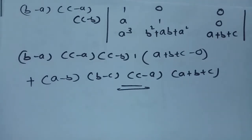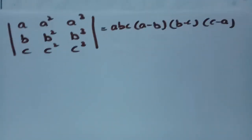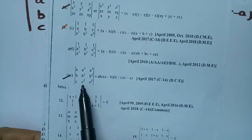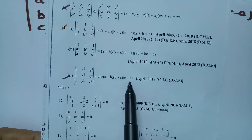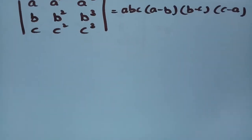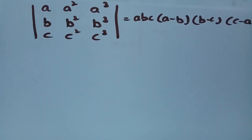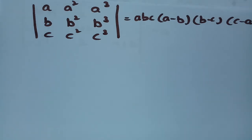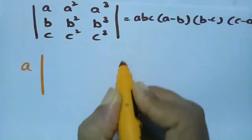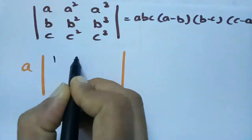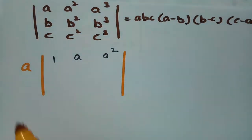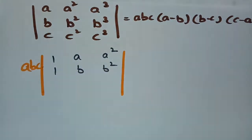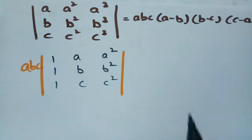The next question: prove that the determinant a, a², a³ / b, b², b³ / c, c², c³ equals abc(a−b)(b−c)(c−a). First, I take 'a' common from row 1, 'b' common from row 2, and 'c' common from row 3, leaving the determinant abc times: 1, a, a² / 1, b, b² / 1, c, c².